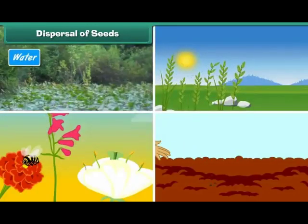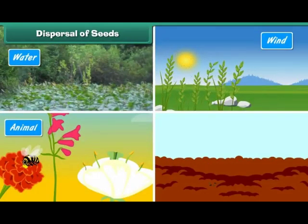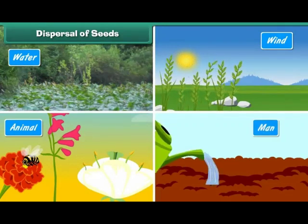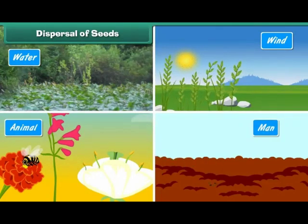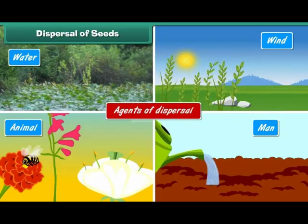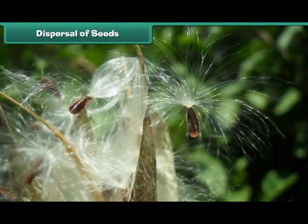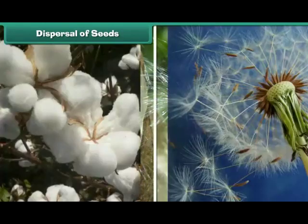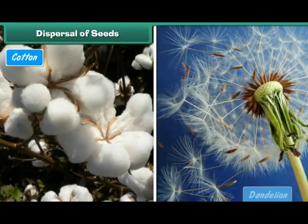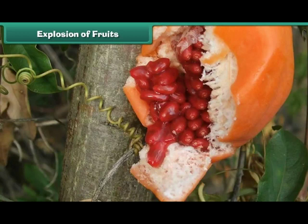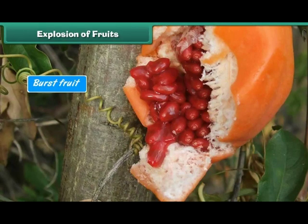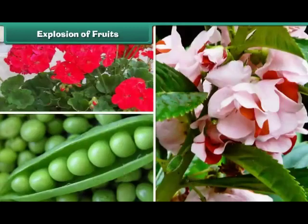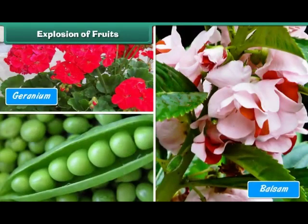Seeds are dispersed by water, wind, animals, and even man — these are known as agents of dispersal. Wind disperses seeds which are light in weight and have wings or feathers, for example cotton, dandelion, and maple. Some fruits, when ripe or dry, burst open and their seeds are thrown away — this process is known as explosion of fruits; examples include geranium, balsam, and pea.